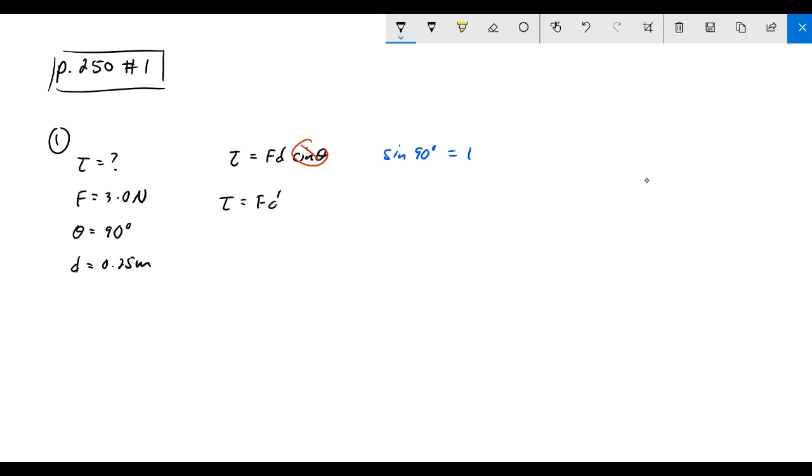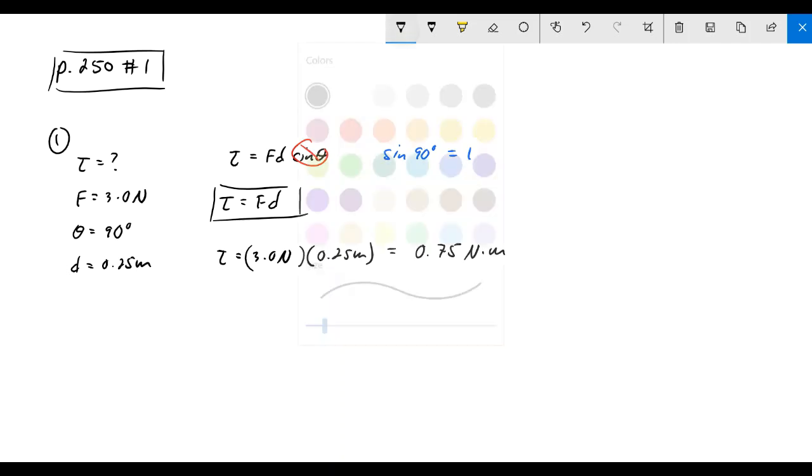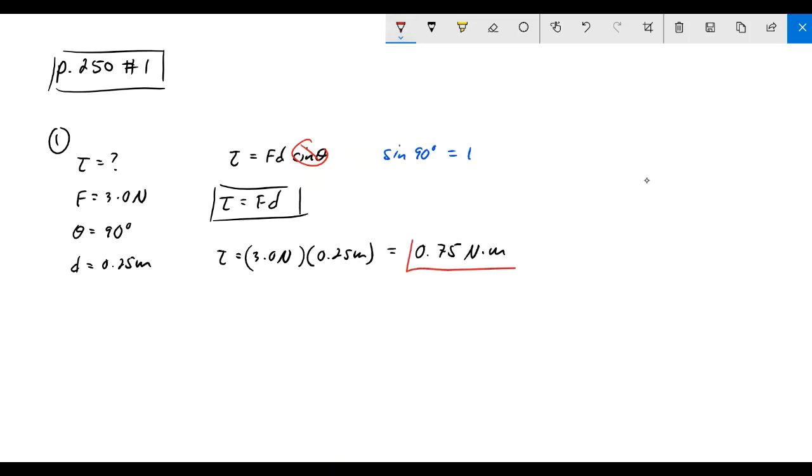That would be the equation that we can use to solve this problem. So then the torque equals we've got our three Newtons and we have our 0.25 meters, and when we multiply those together we have 0.75 Newton meters. That is the answer for number one: 0.75 Newton meters. We don't shorten that to joule because the angle is perpendicular, it's 90 degrees.